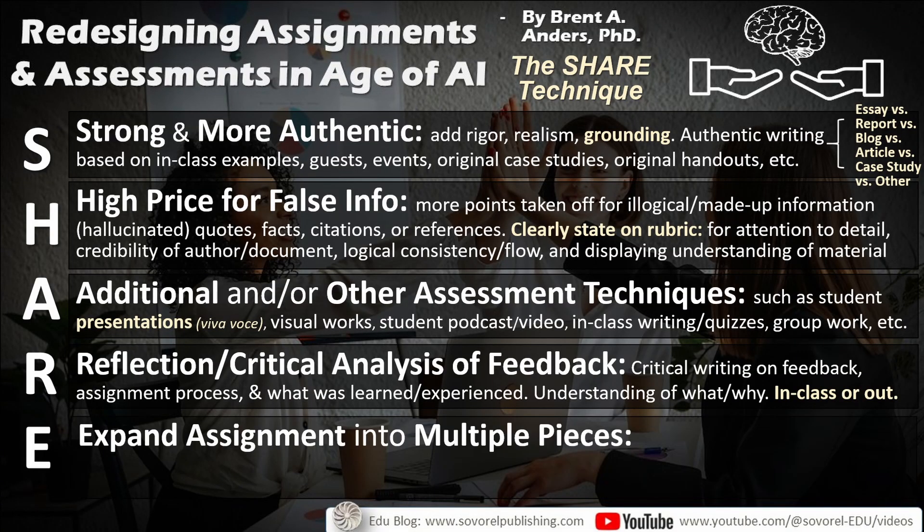The final letter E deals with Expanding the assignment into multiple pieces. We look at the assignment and think about whether the process is still adequate given that we now have AI. For example, if I give presentations on a topic and then say you have two weeks to write an essay, the problem is that if we wait two weeks for the final product, we're missing out on everything happening in between. So we can break that type of assignment up into different portions.